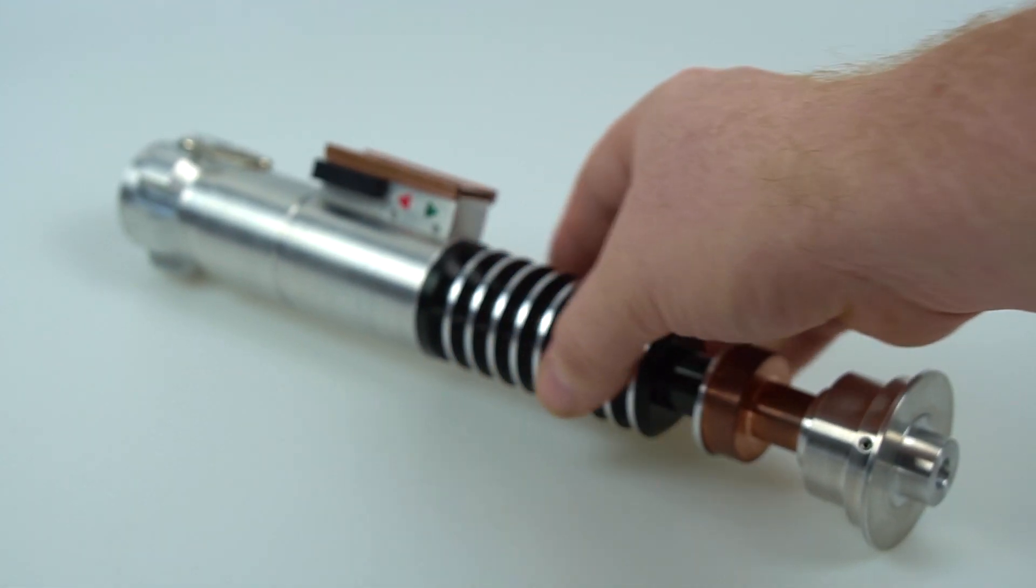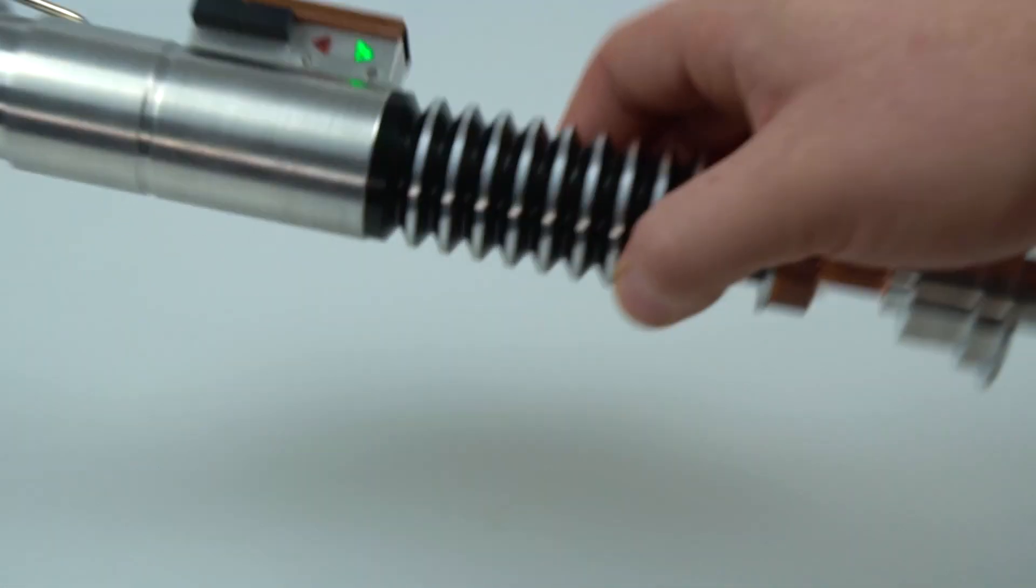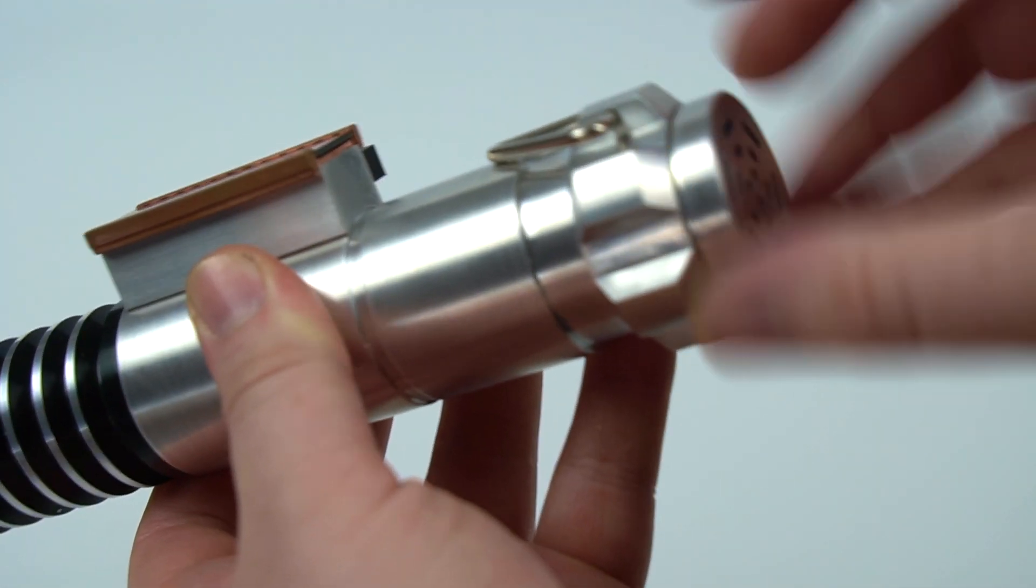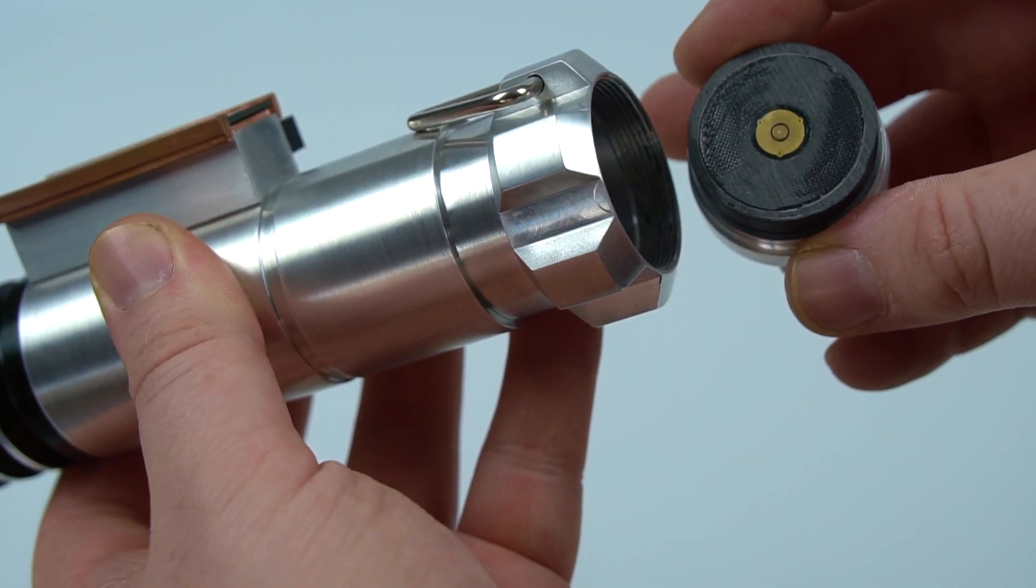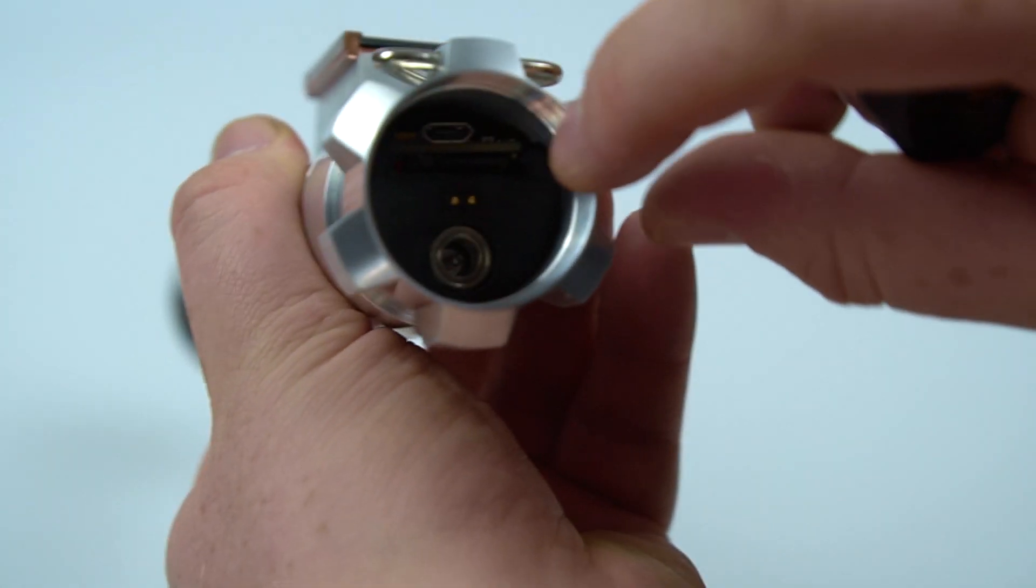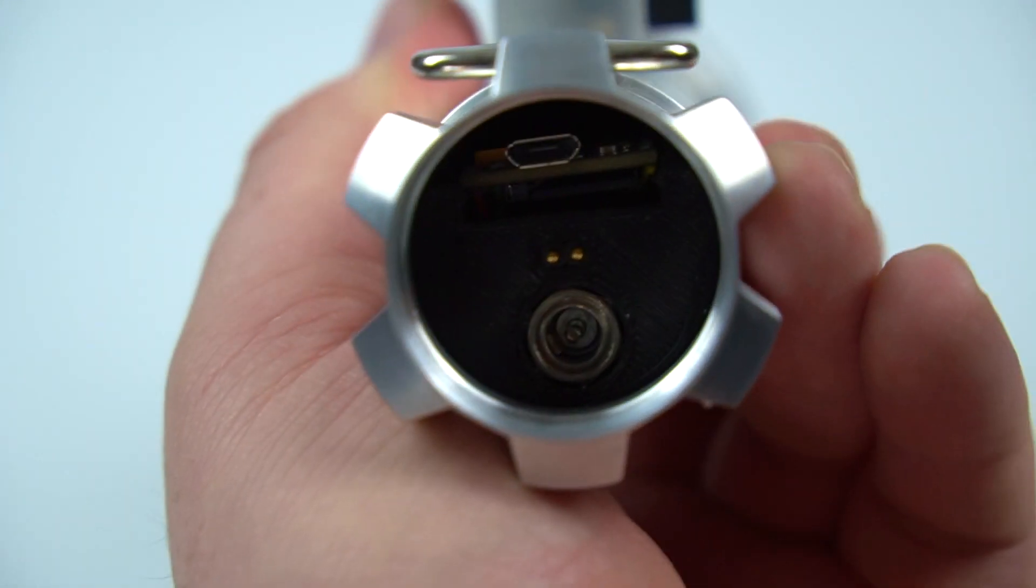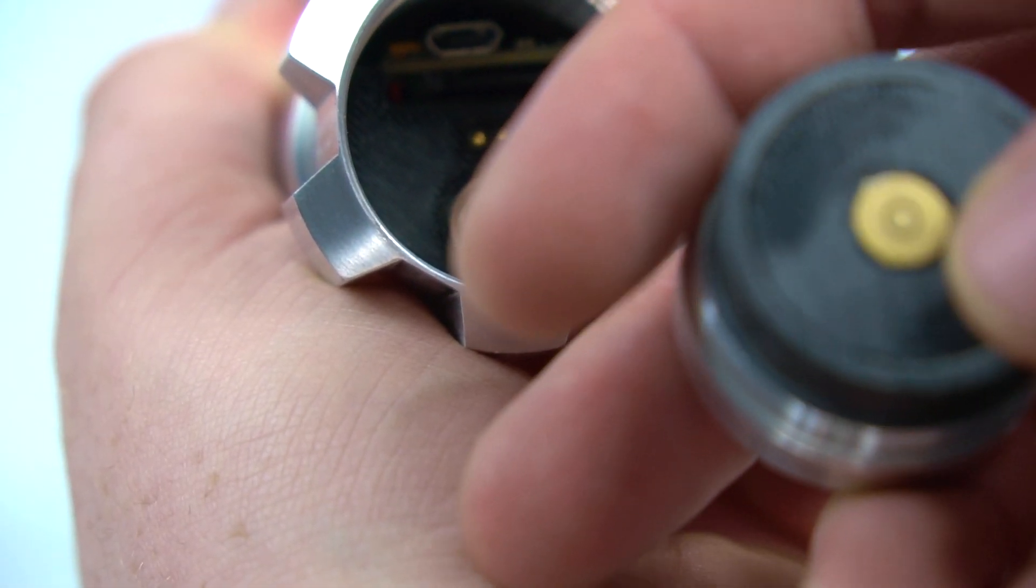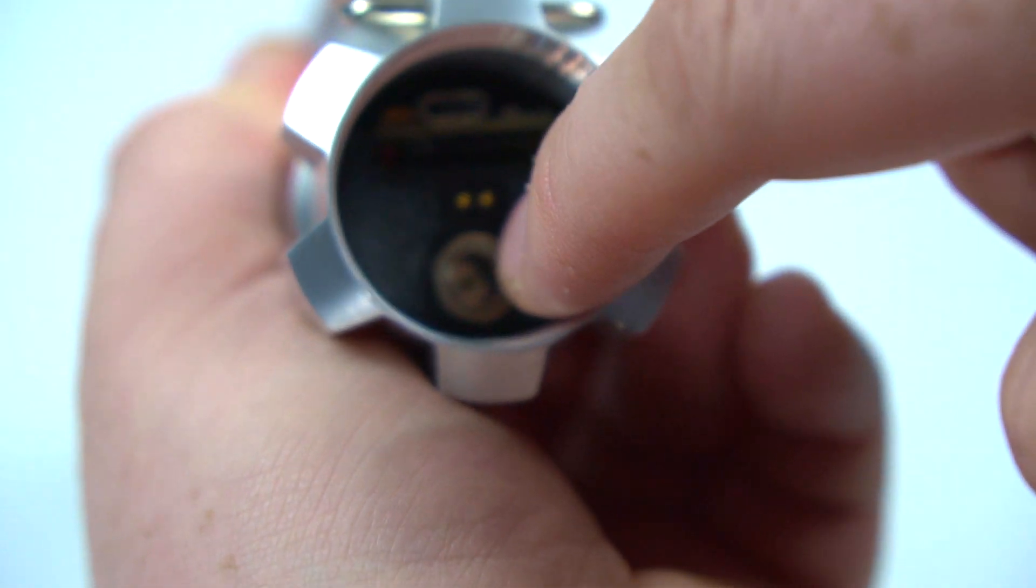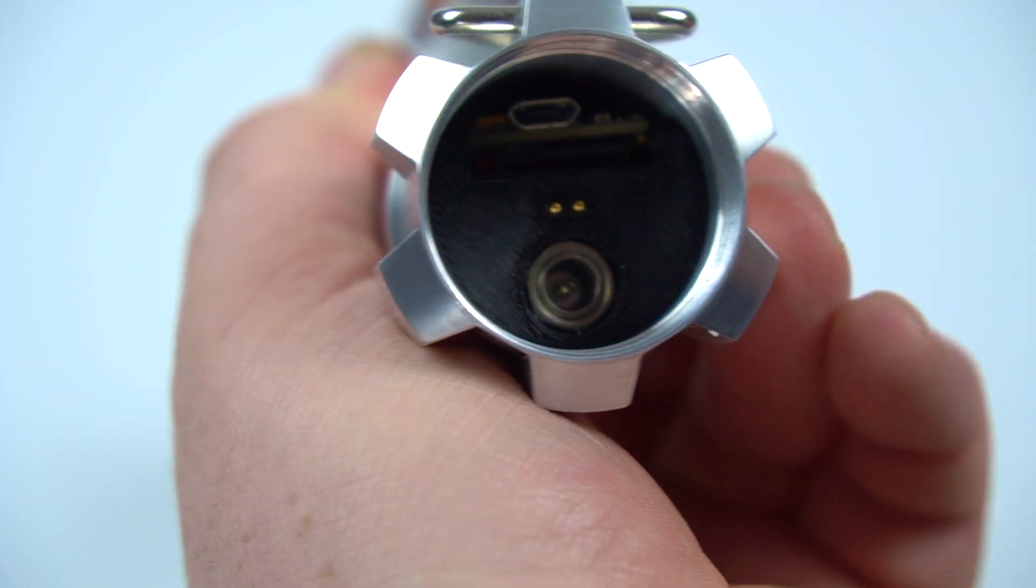It also has a pogo pin speaker connection system. If I undo this here, you can see there's a PCB which connects to two pins poking through for the speaker connection. You can see two pins which press on this speaker PCB. You've got the recharge port there where you plug the charger in, and you've got USB and SD card access.